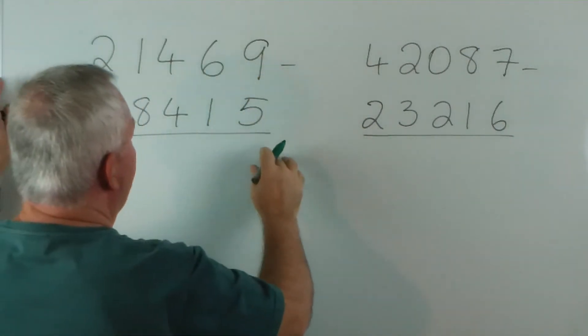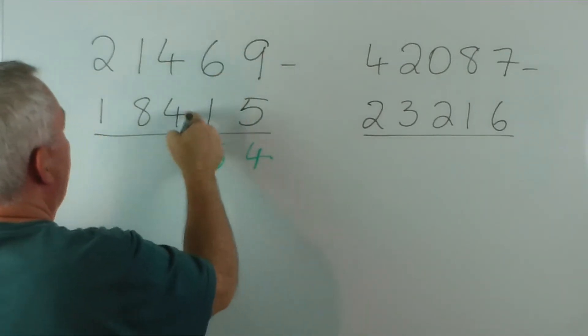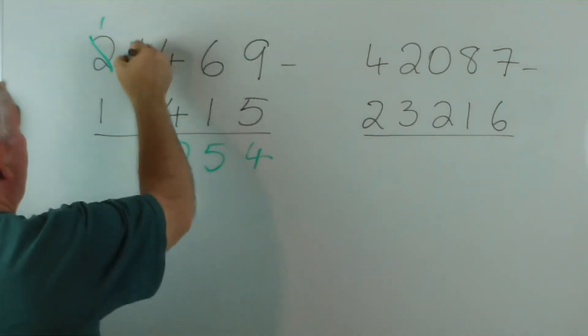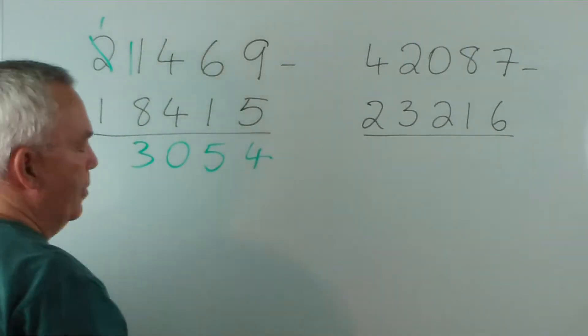So let's check this out. 5 from 9, 4. 1 from 6, 5. 4 from 4, 0. 8 from 1 can't do so we borrow. 11 minus 8 is 3, and 1 from 1 is 0. So there it is.